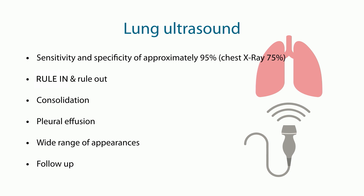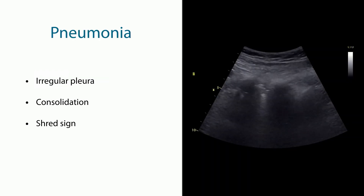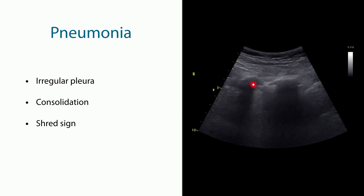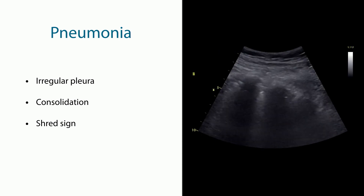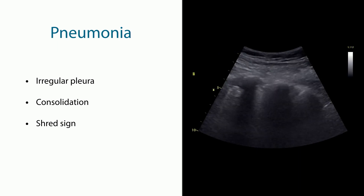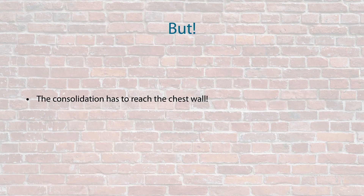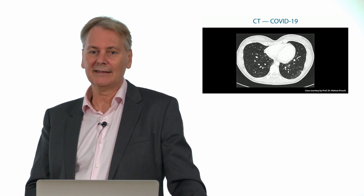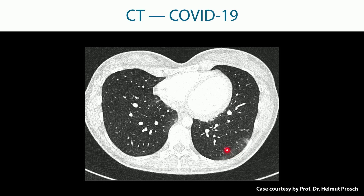You can also see a pleural effusion, and you can follow up whether your treatment is successful. Pneumonias can present on lung ultrasound as a very irregular pleura with small consolidation areas — this is a so-called shred sign, where the lung seems like something has been torn out. The consolidation has to reach the chest wall, and in fact 90% actually do. With lung ultrasound we can detect all the pathologies that reach the chest wall. Here's a CT example of a COVID-19 patient confirming the infiltrate is close to the chest wall — definitely a lesion we can image with ultrasound.